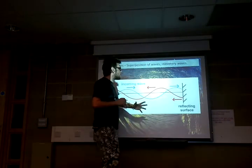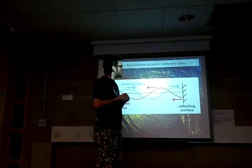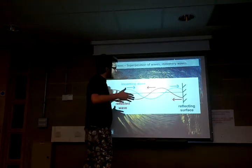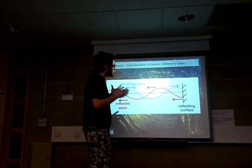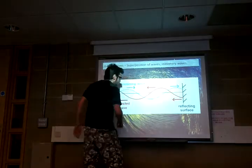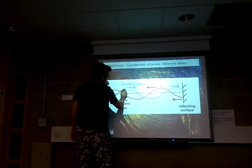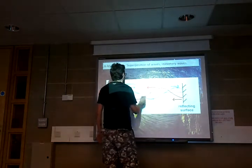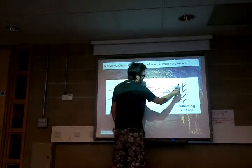Superposition is the precursor to setting up a stationary wave. There are two waves at the same time — we've got our wave direction going here. This is our blue wave going through, travelling forwards. What we're doing is bouncing it off a reflective surface.